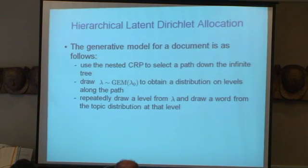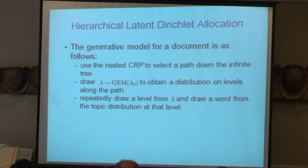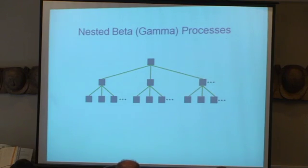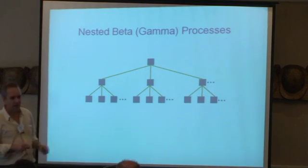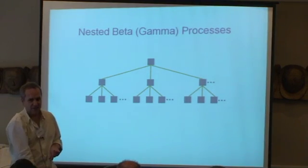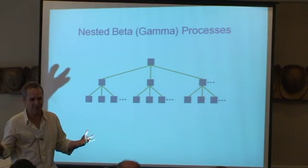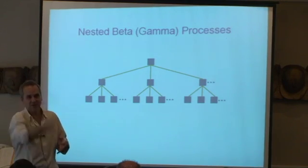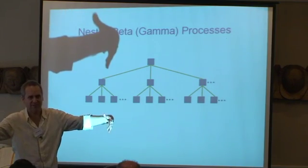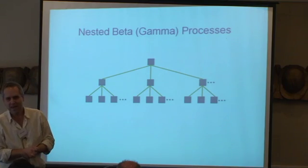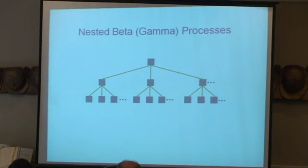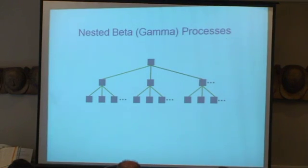We've done that on a bunch of domains — we call it hierarchical latent Dirichlet allocation. The problem with that model is that a document is one path down the tree, so we're back to a single topic model — it has abstraction up and down the tree, but it doesn't allow you to go over multiple topics and multiple branches. That's been a problem for about five years. If you read the paper in the Pearl volume, you will see something called the nested beta process, which does exactly this — it allows you to go down multiple branches of the tree and generate words all along that.